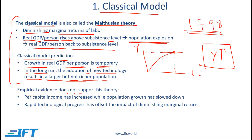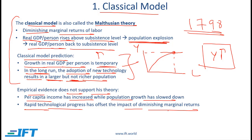You can see that this theory is fairly straightforward, but the predictions don't hold true. Empirical evidence does not support this theory. We have seen over the last century that per capita income has increased while population growth has slowed down. Also, rapid technological progress has offset the impact of diminishing marginal returns, so this concept of diminishing marginal returns of labor has also not panned out over the last century.